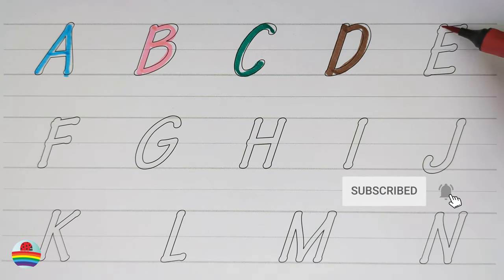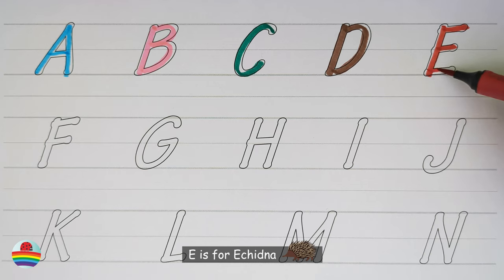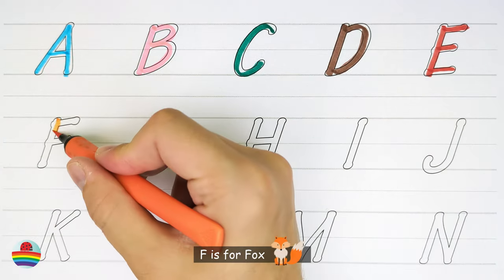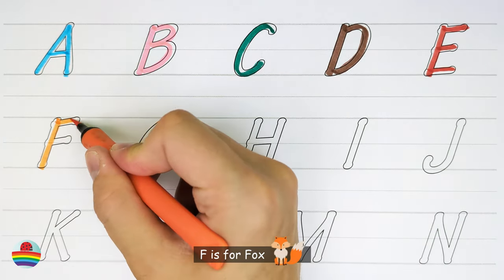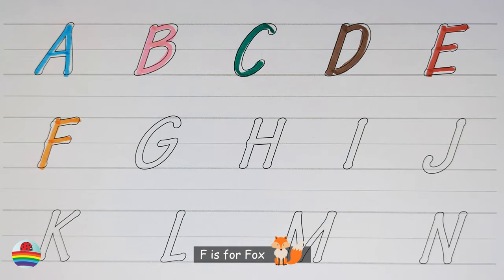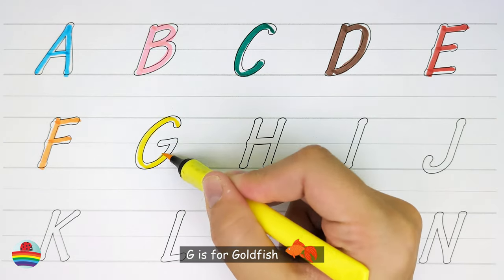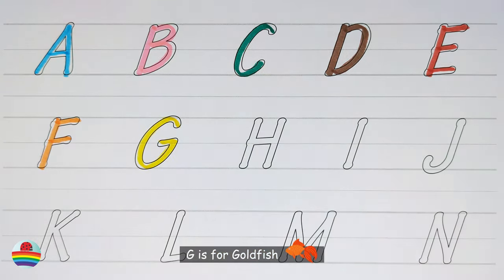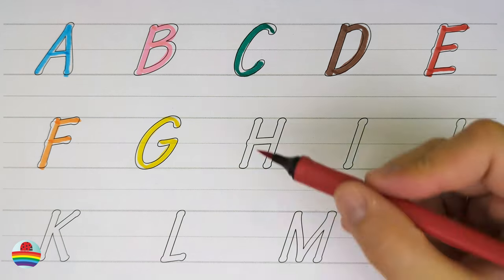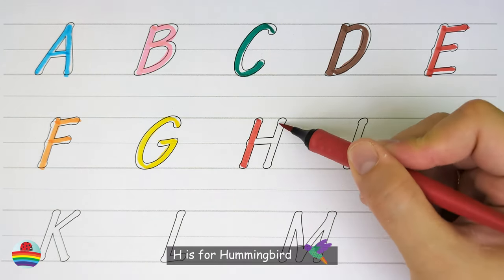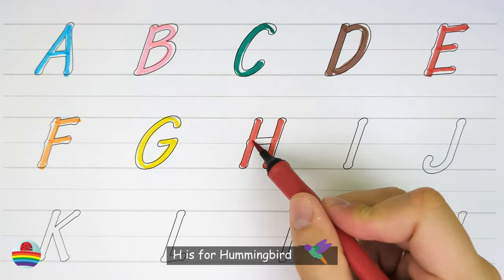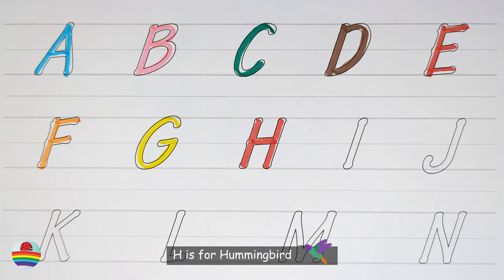C. C is for chameleon. C. D. D is for dingo. D. E. E is for echidna. E.